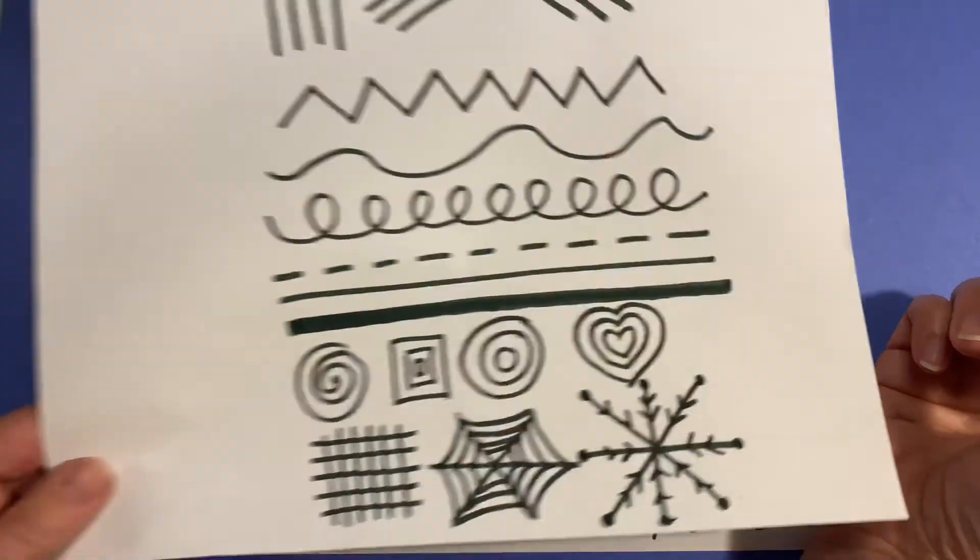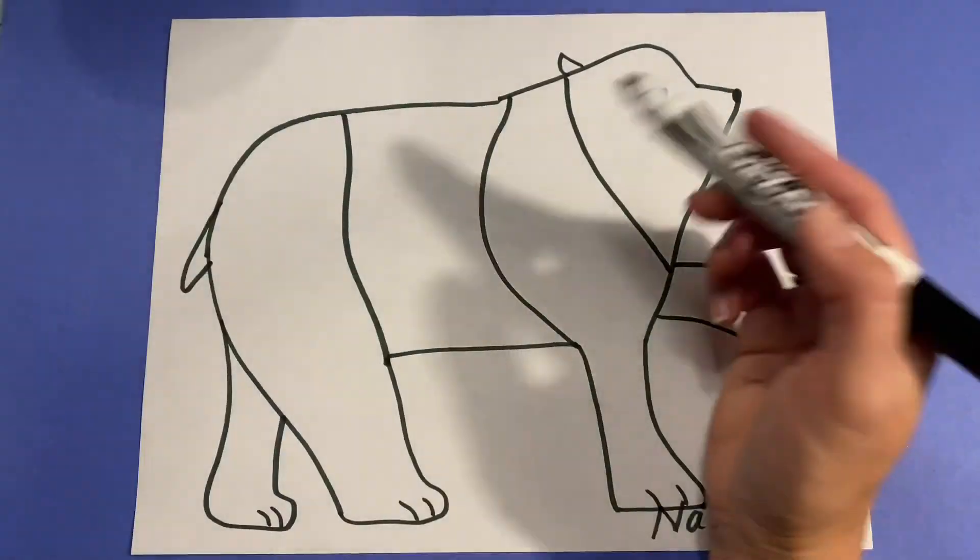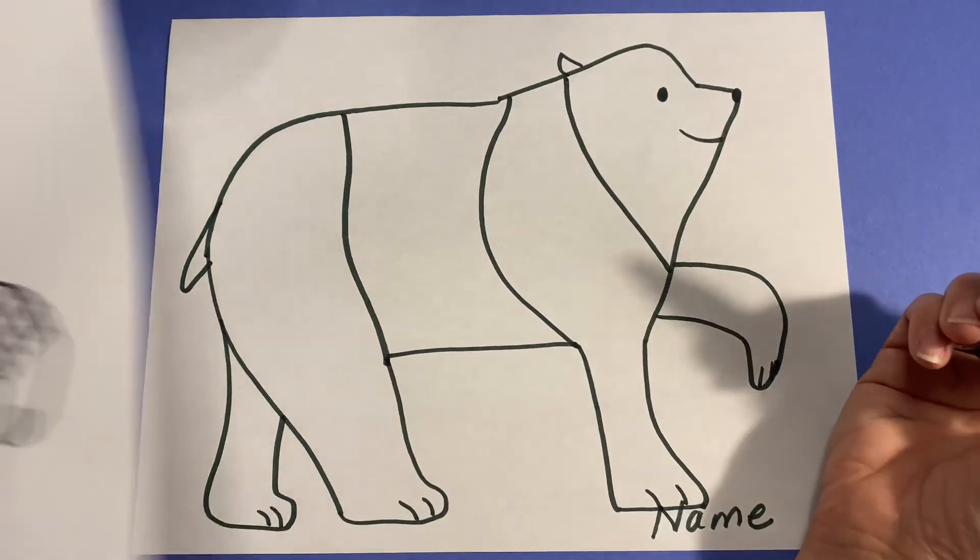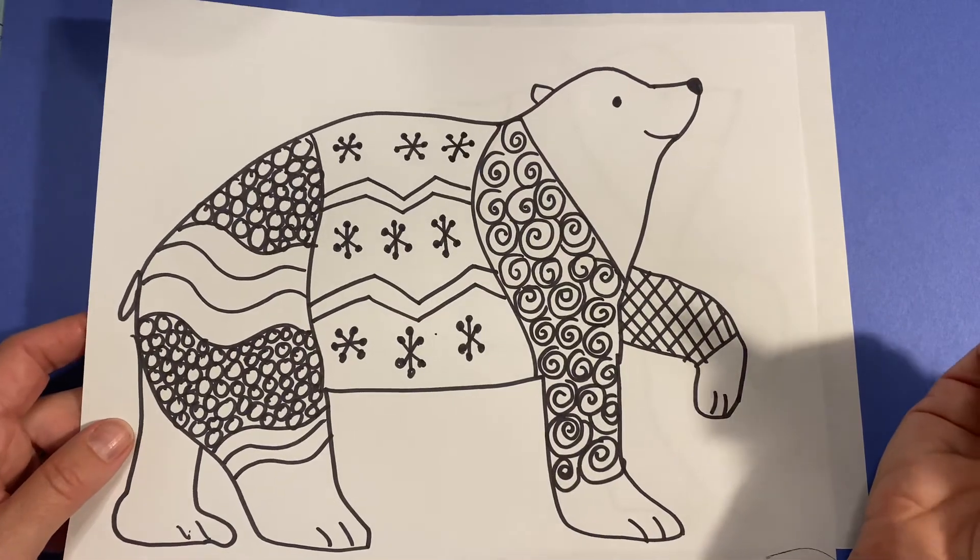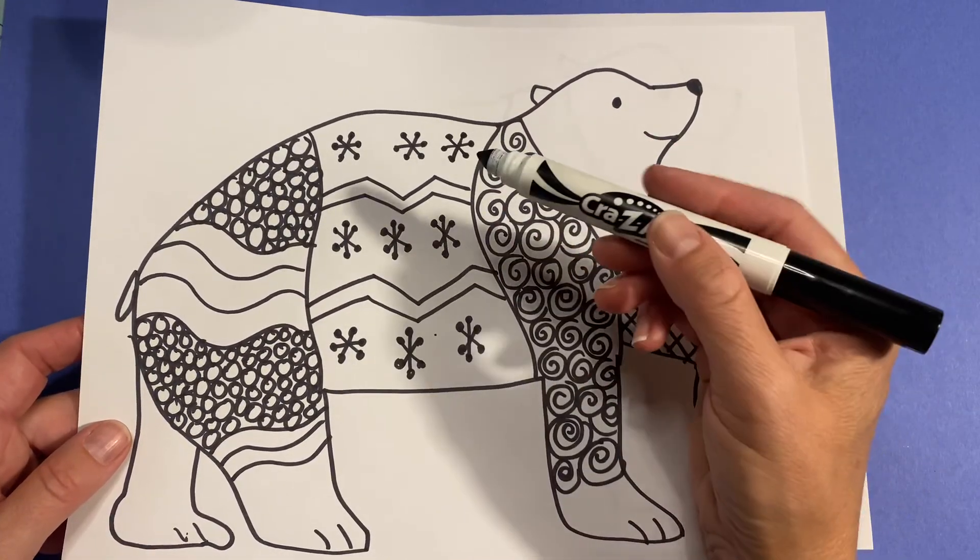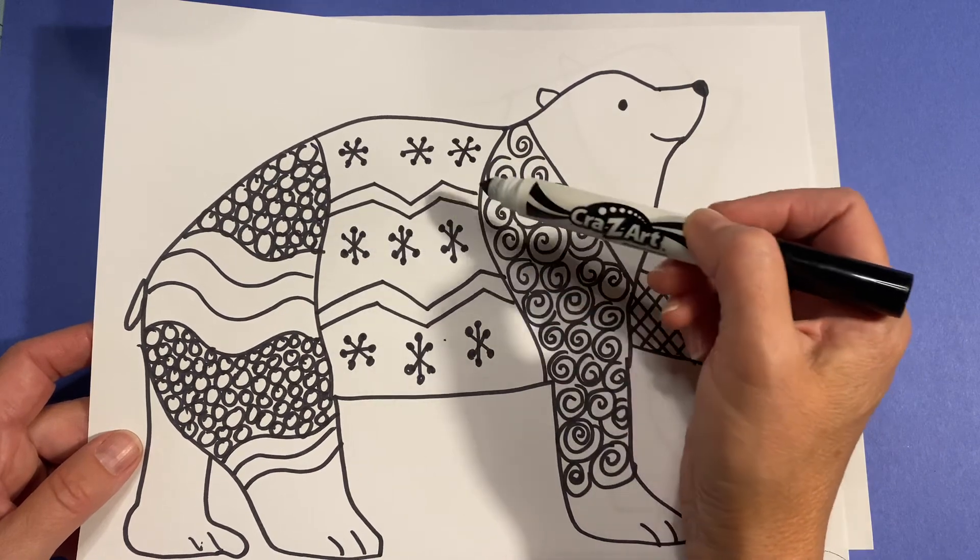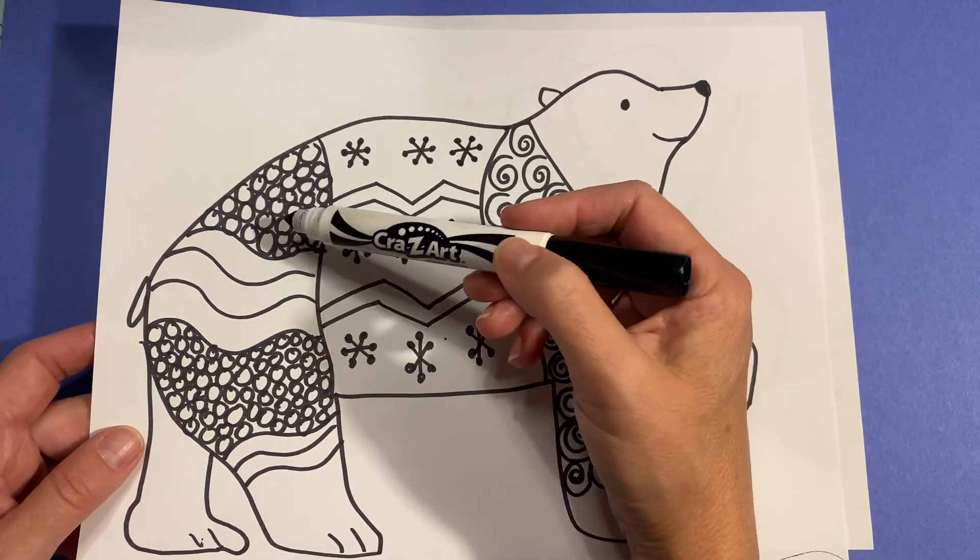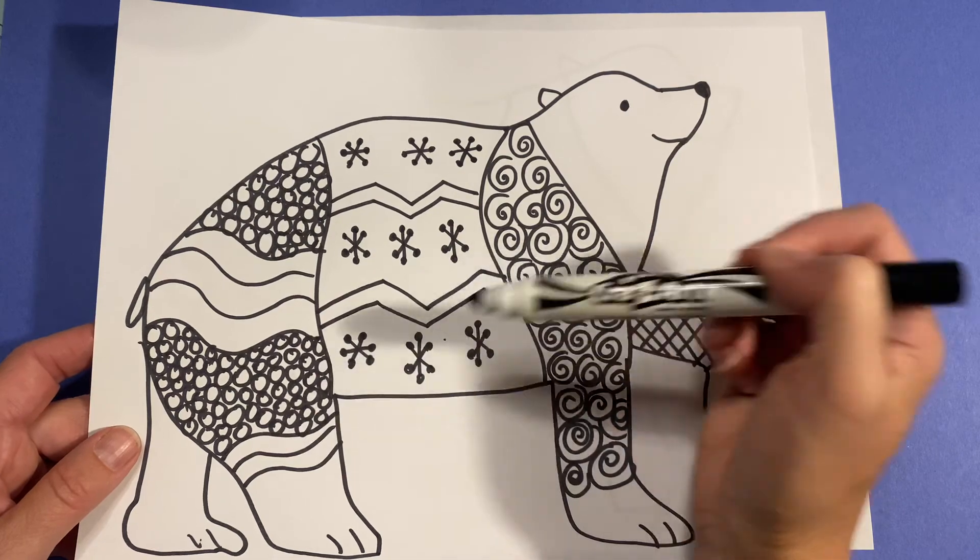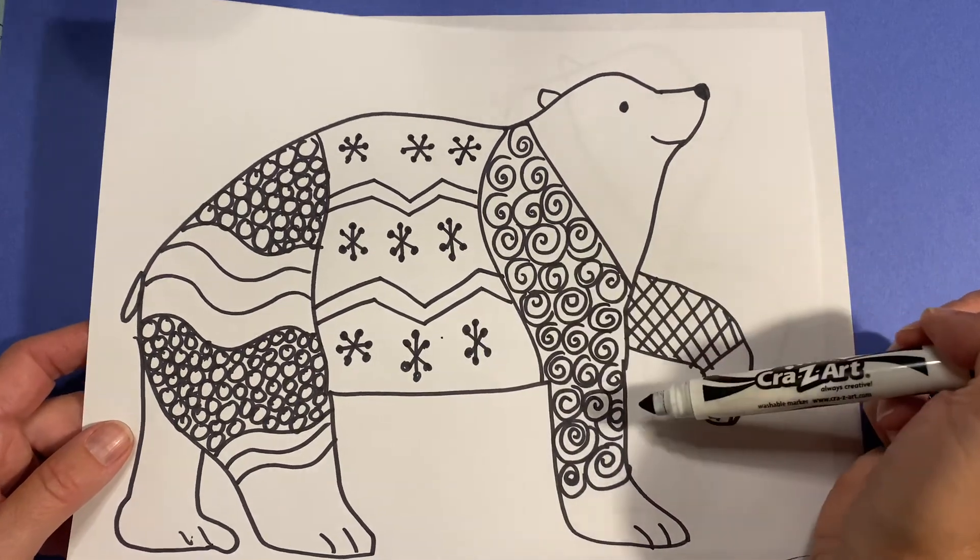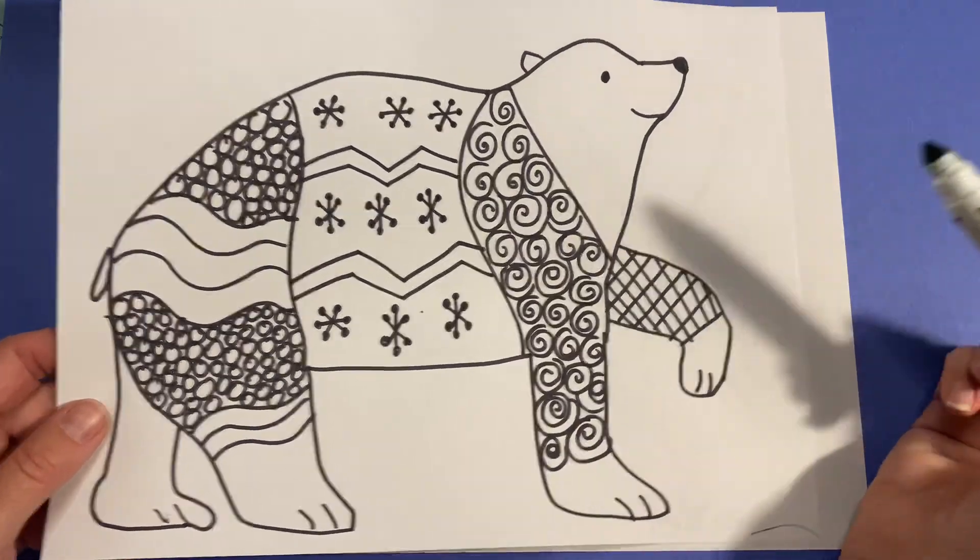And what you're going to do is take what you already know about line designs and patterns and fill each section with a different design. Now as fourth and fifth graders, maybe you want to combine some patterns. You could see I combined snowflakes with jagged lines, circles with wavy lines, and here I just did some spirals and a checkerboard.